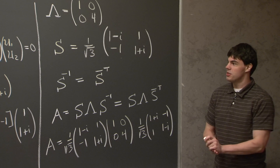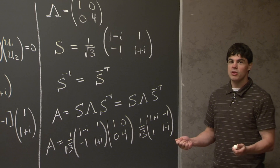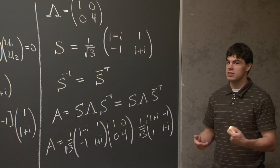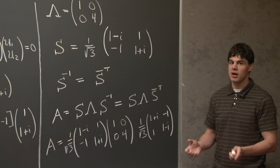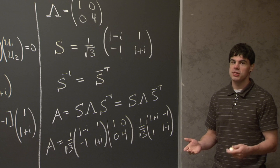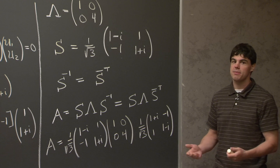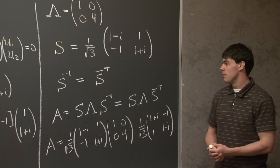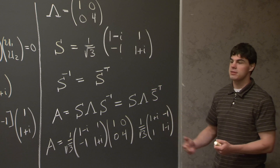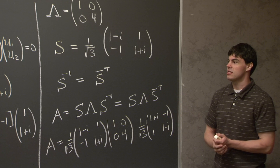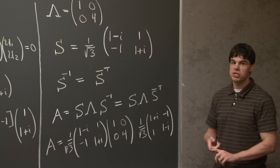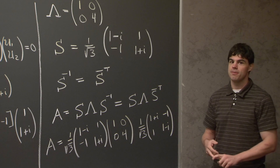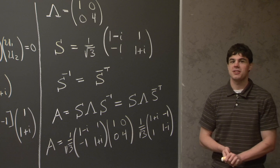To summarize: even though we were given a complex matrix A, the process to diagonalize it is the same as before. The first step is to find the characteristic equation and eigenvalues. The second step is to find the eigenvectors using the same procedure. In general the eigenvectors can be complex, but for this special case when A is Hermitian, the eigenvalues are real and the eigenvectors are orthogonal to each other. I'll conclude here and see you next time.